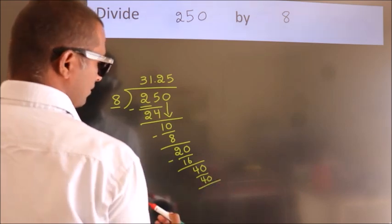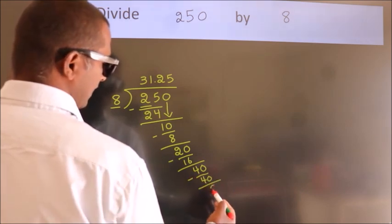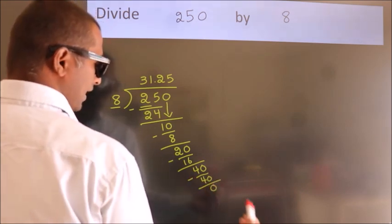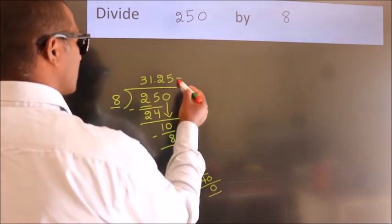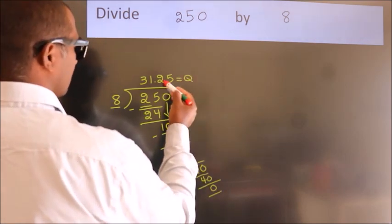Now we subtract. We get 0. Here we got remainder 0. So this is our quotient, 31.25. Notice.